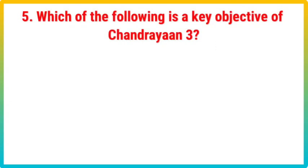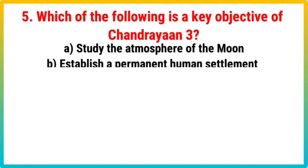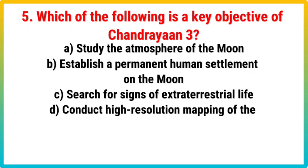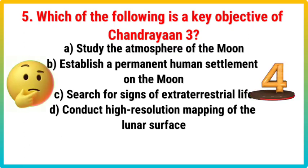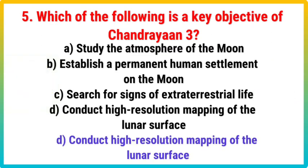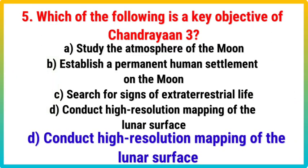Question 5. Which of the following is a key objective of Chandrayaan-3? Your options: A. Study the Atmosphere of the Moon, B. Establish a Permanent Human Settlement on the Moon, C. Search for Signs of Extraterrestrial Life, D. Conduct High-Resolution Mapping of the Lunar Surface. Correct answer is D. Conduct High-Resolution Mapping of the Lunar Surface.